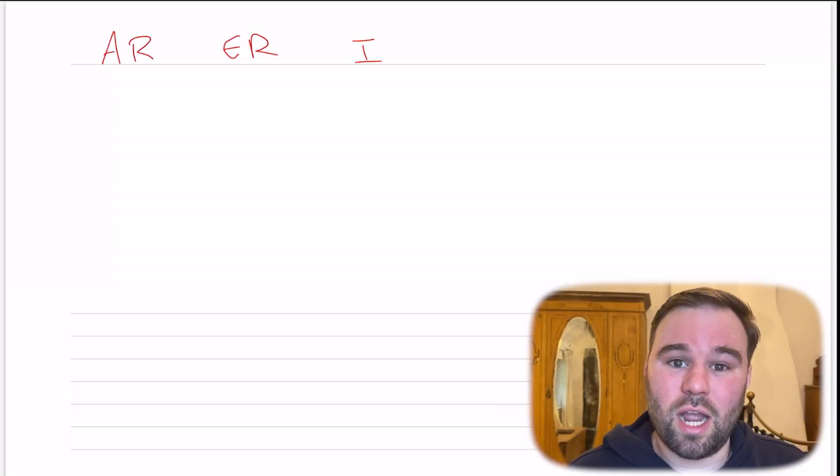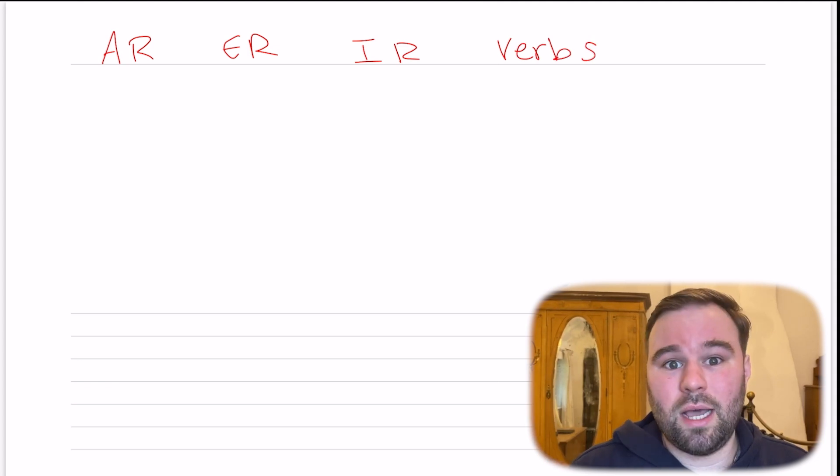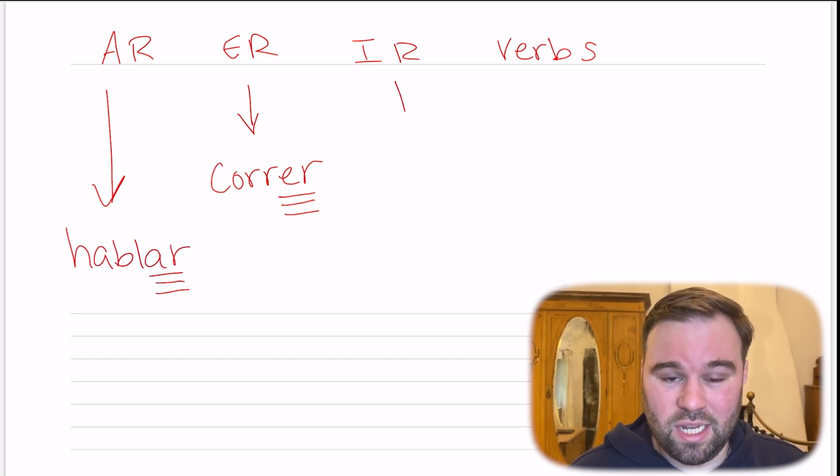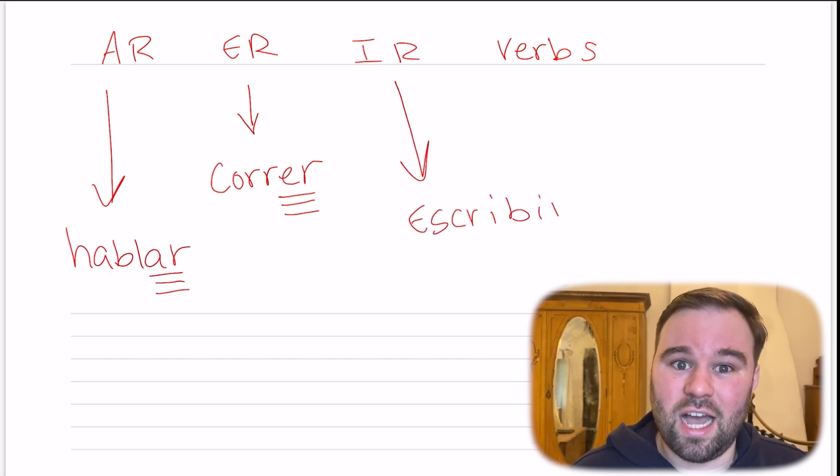Now that we know what a verb is, let's talk about infinitive verbs, because many people who translate from Spanish to English make a huge mistake with infinitive verbs — it affects the way you speak and your accuracy. An infinitive verb in Spanish is a verb that is not conjugated, meaning it's going to end with -AR, -ER, or -IR. For example: correr, hablar, escribir — all of these verbs are in the infinitive form, and we know because we see the verb endings AR, ER, and IR.